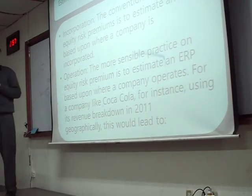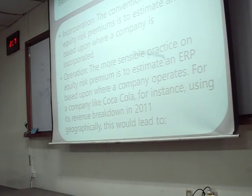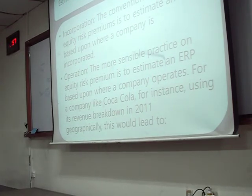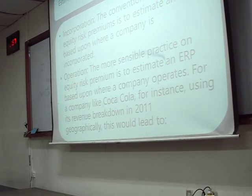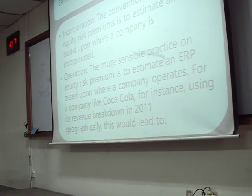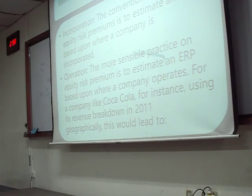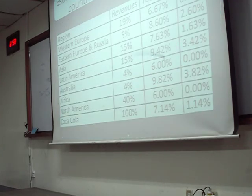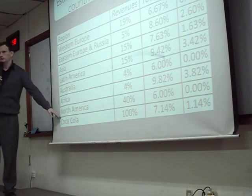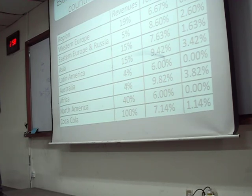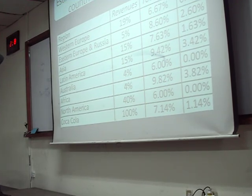So, Coca-Cola — where do you think it gets its revenue? If I was to tell you Americas, Asia, Europe — what percent would you say? Someone says America 20%, Europe 30%, Asia 50%. Do Asian people drink more Coca-Cola than US people? There are more Asian people. Let's see if you're right. North America: 40%. Western Europe: 20%. Eastern Europe: 20%.